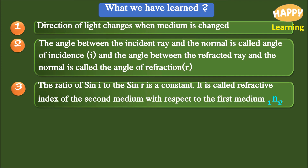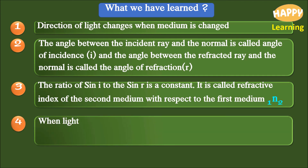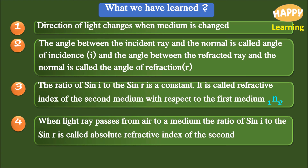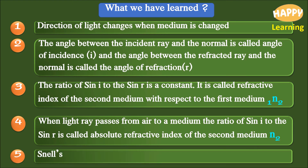Point 4 — when a light ray passes from air to any medium, the ratio of sin i to sin r is called the absolute refractive index of the second medium. Point 5 — Snell's law is written as n₁ sin i = n₂ sin r.